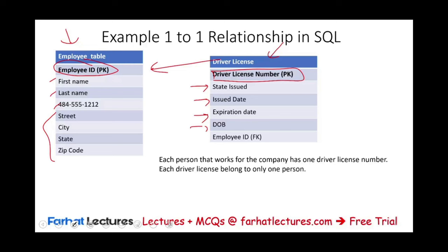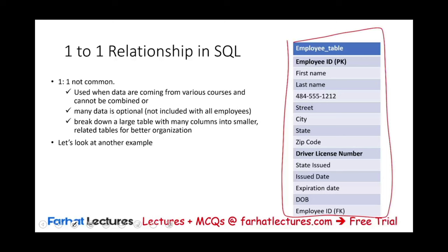Each driver's license belongs to only one person, and each person has one driver's license. Now, could you think of a better solution rather than having two tables? The answer is yes — that's why one-to-one is not common. We can combine or merge these two tables into one employee table, where the employee ID is the primary key and the driver's license information simply becomes part of the larger table.